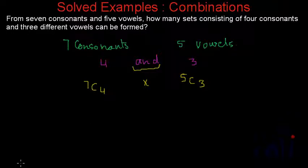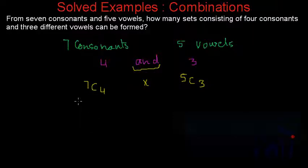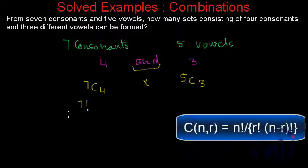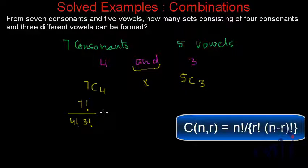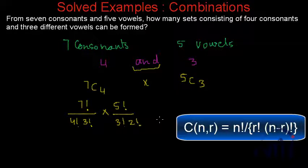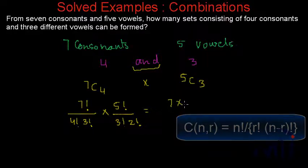That gives us the number of sets we can form by selecting four consonants out of seven and three vowels out of five. 7C4 equals 7 factorial divided by 4 factorial times 3 factorial, multiplied by 5 factorial divided by 3 factorial times 2 factorial.